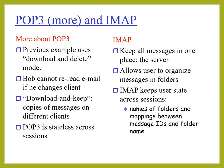Comparing POP3 and IMAP: POP3 uses download-and-delete mode and cannot re-read email if the client changes. It can download and keep copies of messages on different clients, but POP3 is stateless across sessions. In contrast, IMAP keeps all messages in one place — the server — and allows users to organize messages in folders. IMAP keeps user state across sessions, including names of folders and mappings between message IDs and folder names.